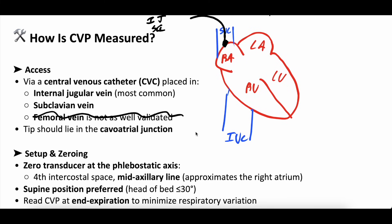I don't tend to use femoral lines for CVP measurement. Subclavian vein works, internal jugular vein works, but the positioning is important too. If your central line is too high, sitting way up in the SVC, that's going to be less accurate. If it's super deep, that might be less accurate too. You really want the cavoatrial junction location to transduce that pressure.